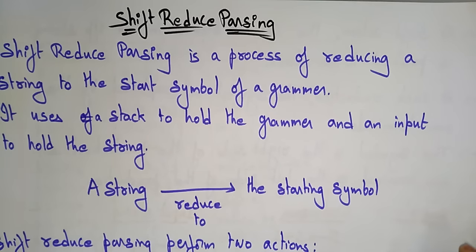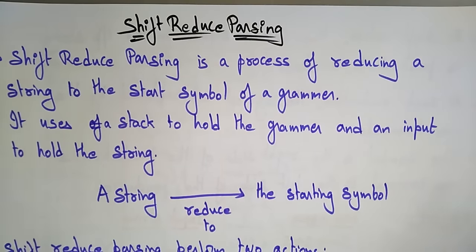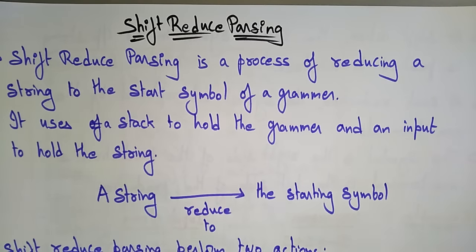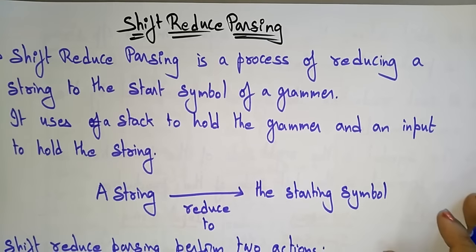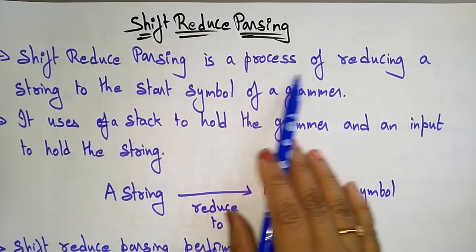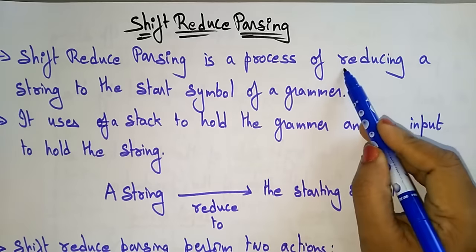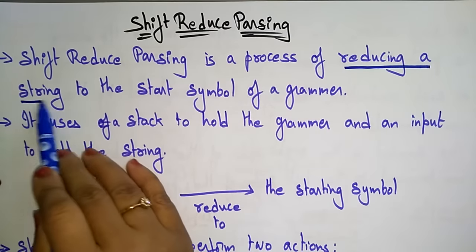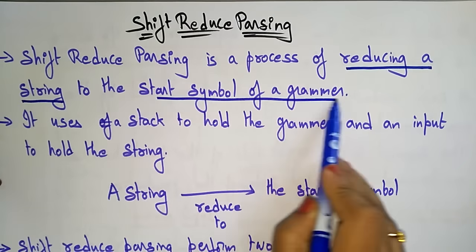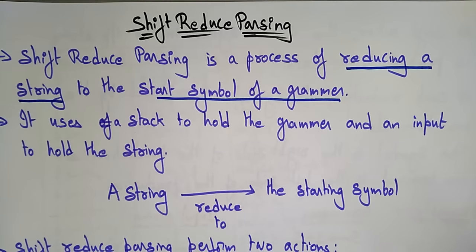Coming to the next topic in compiler design: shift-reduce parsing. The name itself tells us we have to reduce the parsing using the shift concept. Shift-reduce parsing is a process of reducing a string to the start symbol of a grammar. Whatever string or equation you are given, that string has to be reduced to the start symbol of a grammar.